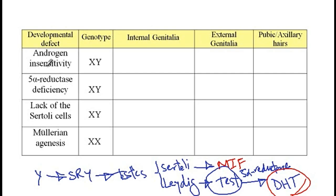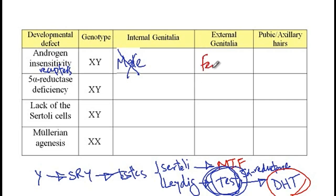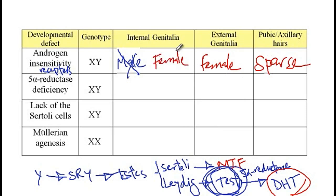In individuals with androgen insensitivity, which is due to defects in the androgen receptors, testosterone cannot act on the Wolffian ducts, and thus male internal genitalia will be absent. At the same time, external genitalia will have a female appearance because the androgen receptors are not working, and pubic and axillary hairs will be sparse. Sertoli cells are still functional in these individuals, so Müllerian inhibiting factor is still produced, and therefore female internal genitalia will also not develop. To summarize androgen insensitivity syndrome: no male or female internal genitalia, external genitalia resembles female characteristics, and there are sparse pubic and axillary hairs.